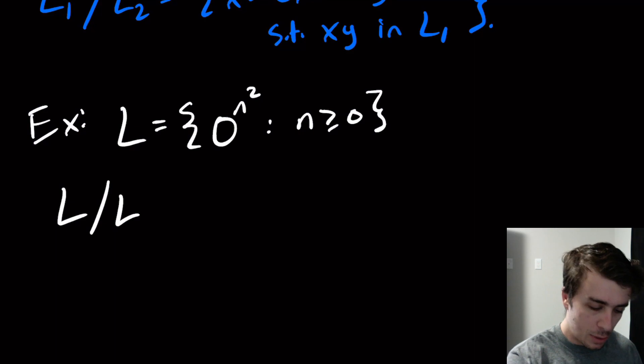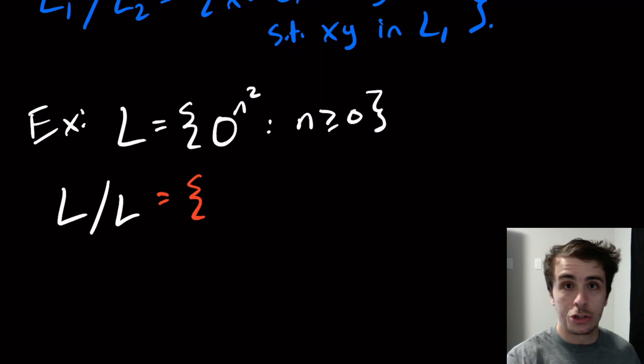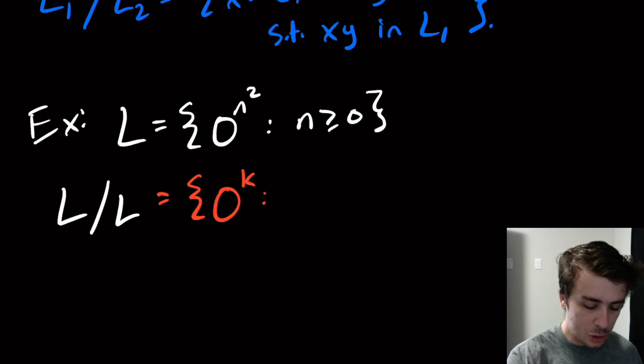This is actually, if we think about it for a second, all the strings of the form zero to the number K such that K is equal to n squared minus m squared for some integers n and m.